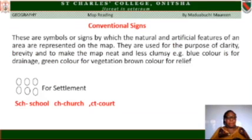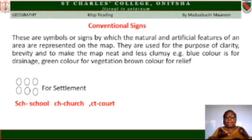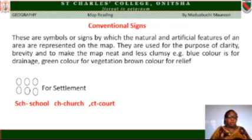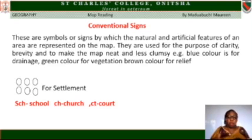Conventional Signs. These are symbols or signs by which the natural and artificial features of an area are represented on a map. They are used for clarity and to make the map neat and less cluttered. For example, blue color is used for water or drainage, green color for vegetation, brown color for relief. Dots are used to show settlement, SCH for school, CH for church, and CT for court.